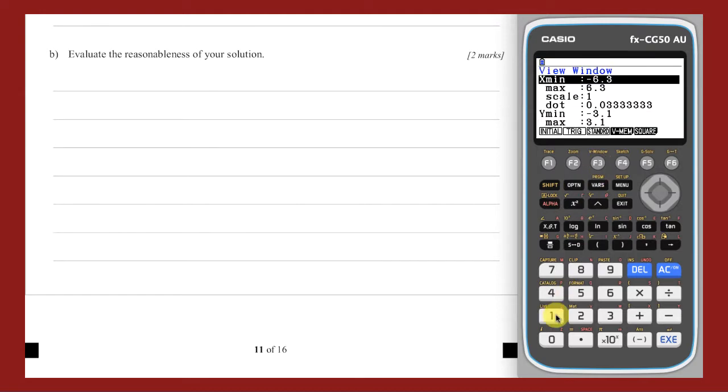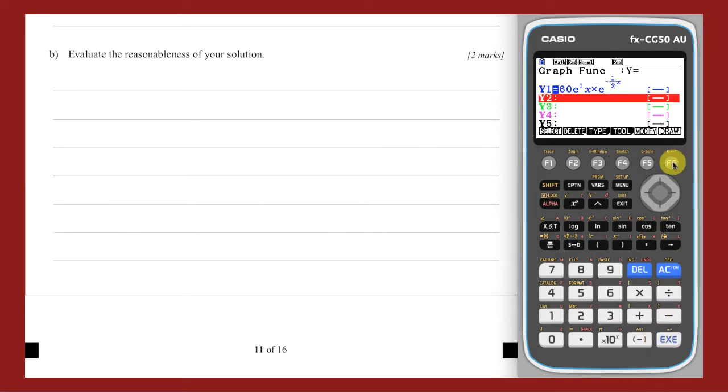Next, I will set a sensible view window for my graph by pressing Shift and F3. My domain should start at 0, as we are graphing time, but we have not been given information about the time for which our model is relevant. Perhaps a 12-hour time window would be a good place to start. My y-axis should start at 0, and should go up to include the stated maximum of 120 mg. I'm going to choose a y-maximum of 130, and choose a scale of 10 on my y-axis. With those settings chosen, I'm going to press Execute, and then press Draw to draw my model.